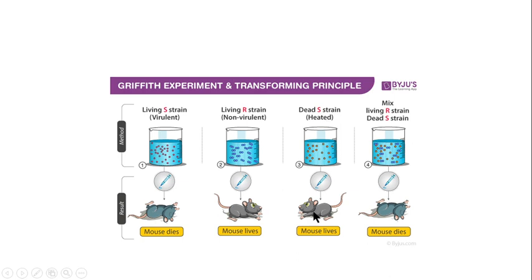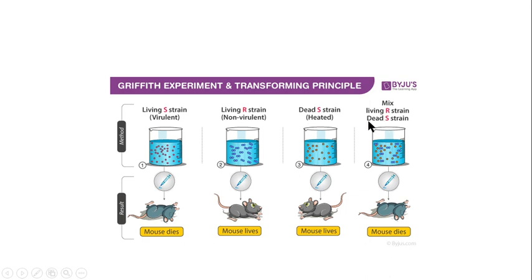This was a very unexpected result because neither the live R strain nor the heat-killed S strain alone was causing the death of the mouse. But when they were mixed and injected into the mouse, the mouse died. He hypothesized that something is transferring from the heat-killed S strain into the live R strain, thereby converting the live R strain into the smooth strain, which was actually causing the death of the mouse. He called this the transforming principle, but he was not sure what exactly was transferring.